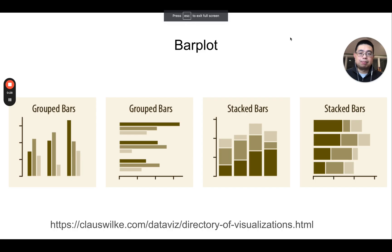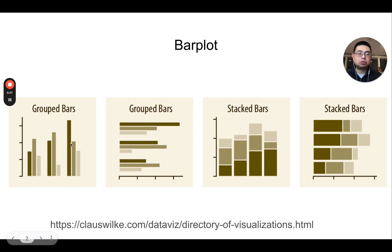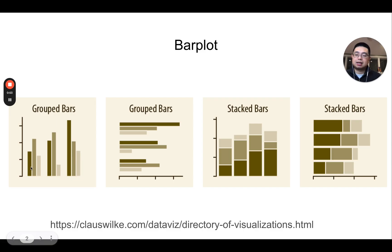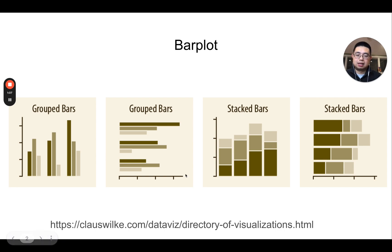The first type of plot you want to learn how to make is called a bar plot. It's very common in all genomics papers and is used to show quantities or amounts. The y-axis is the number and the x-axis can have multiple groups. For example, you can have three different genotypes and three different conditions placed side by side to compare. You can also flip them and put the quantities on the x-axis.